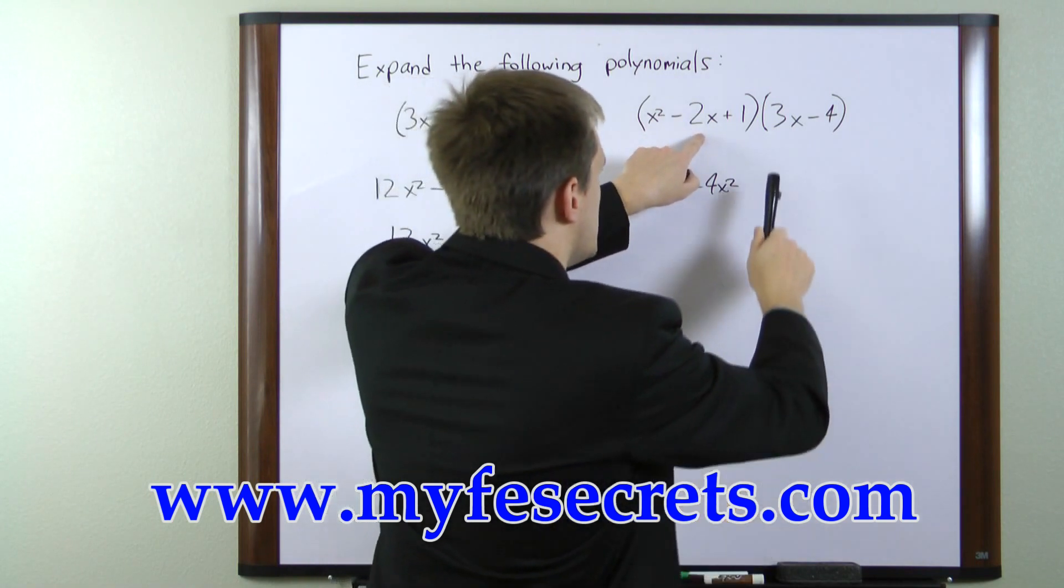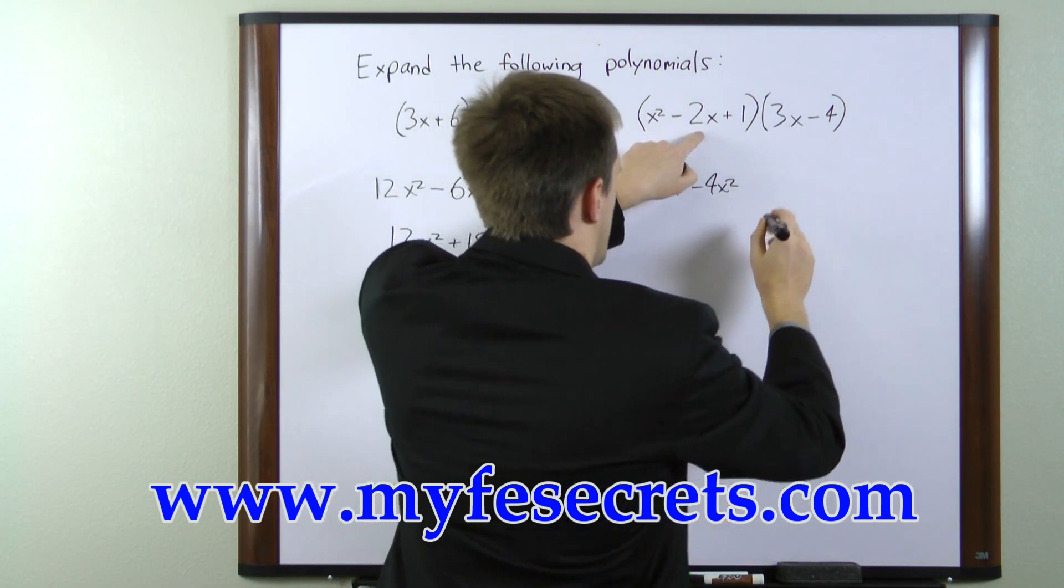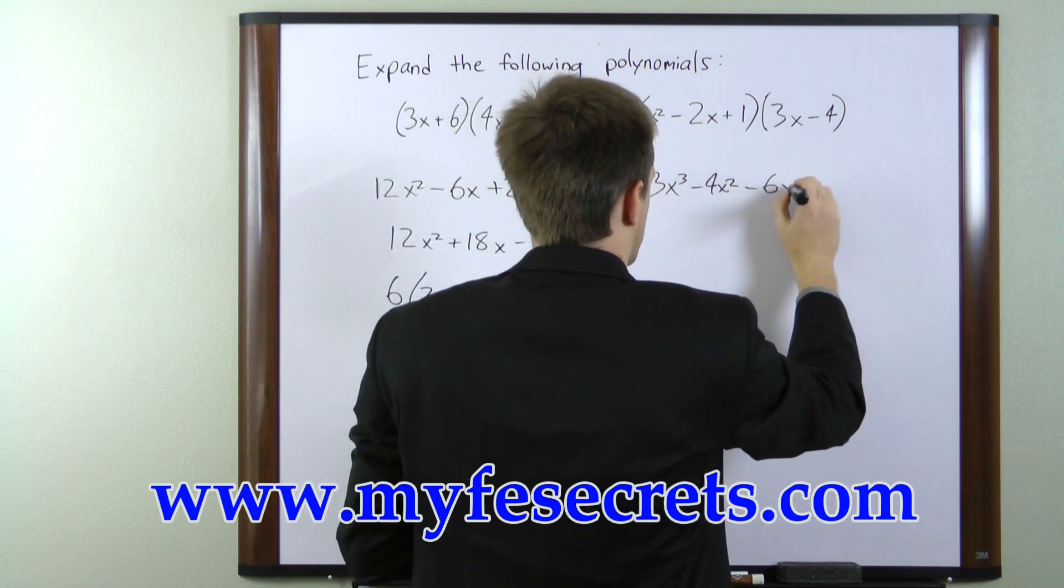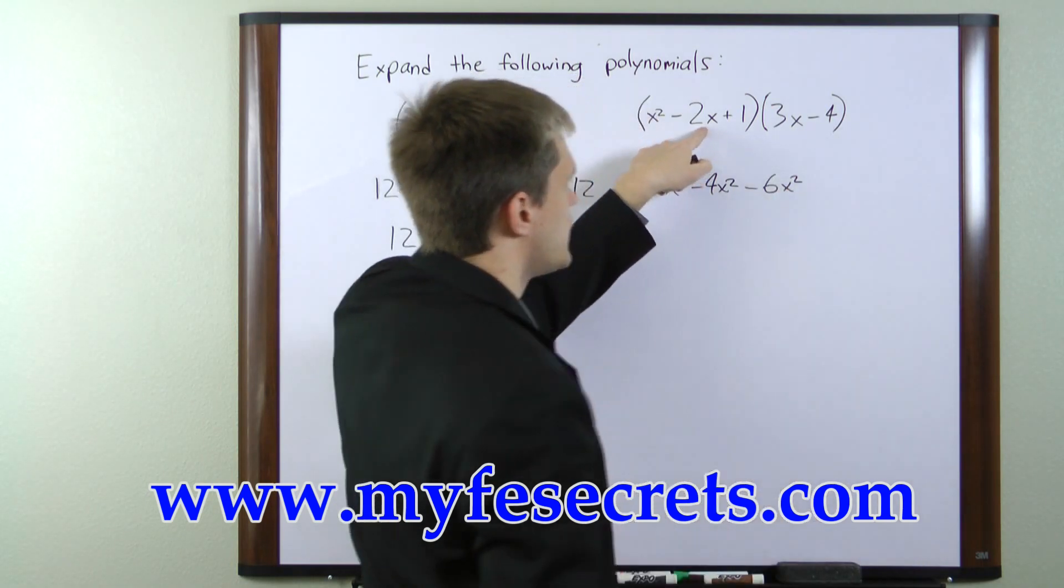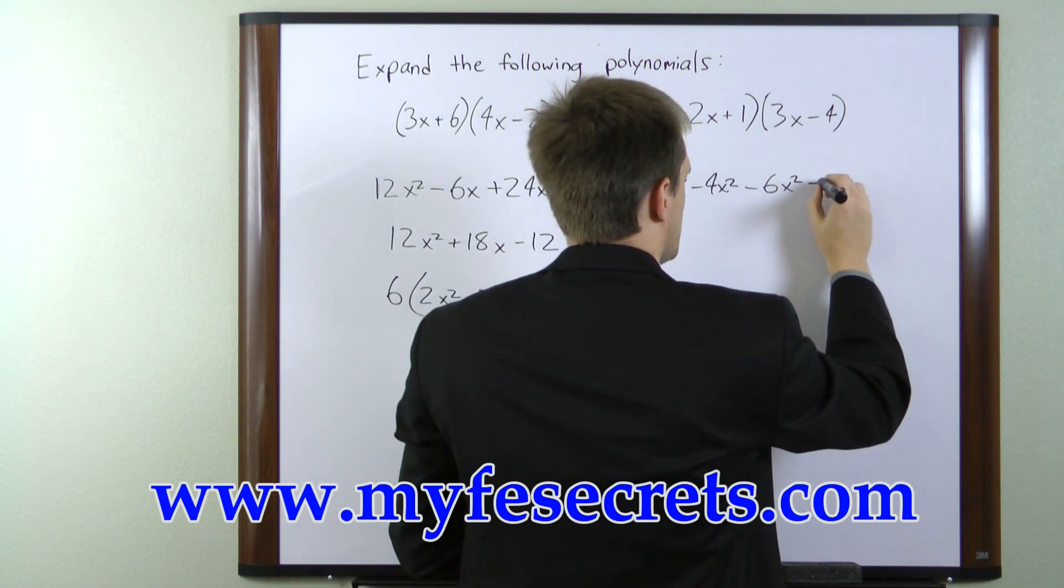Moving to the second term here, minus 2x times 3x gives us minus 6x squared. Minus 2x times minus 4 equals a plus 8x.